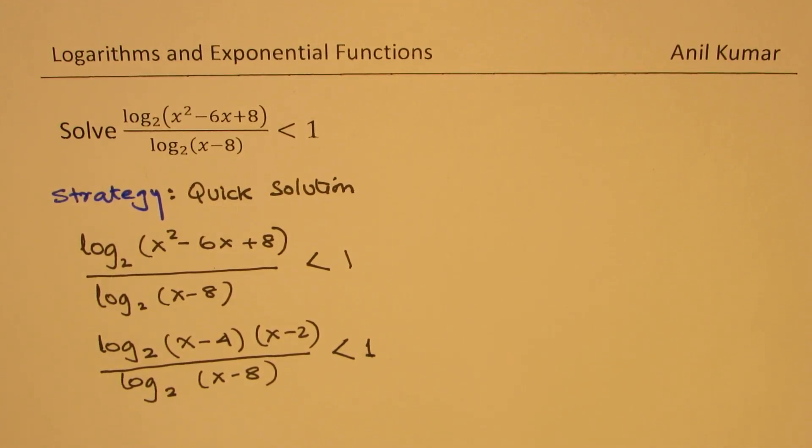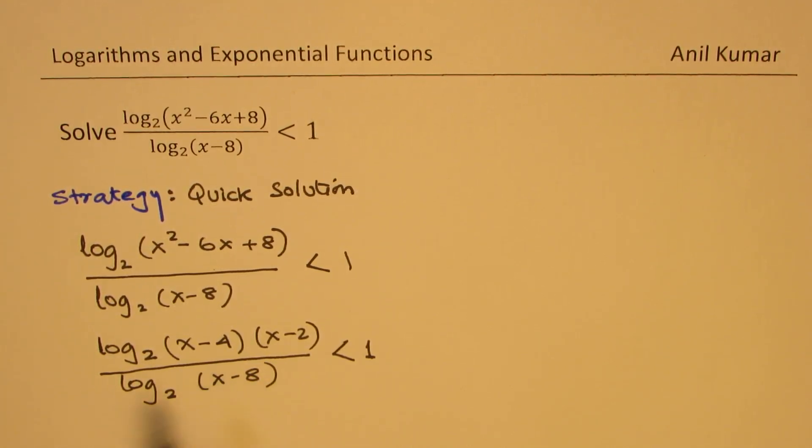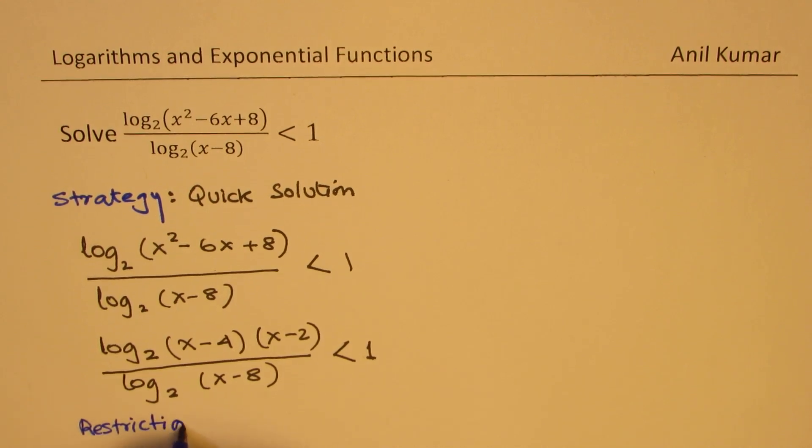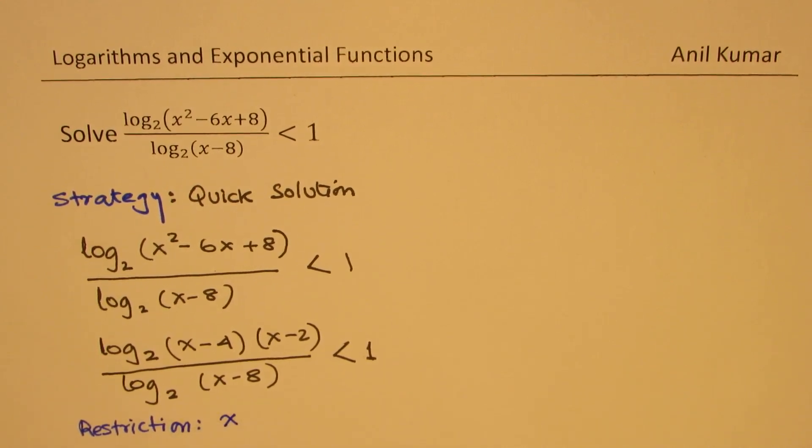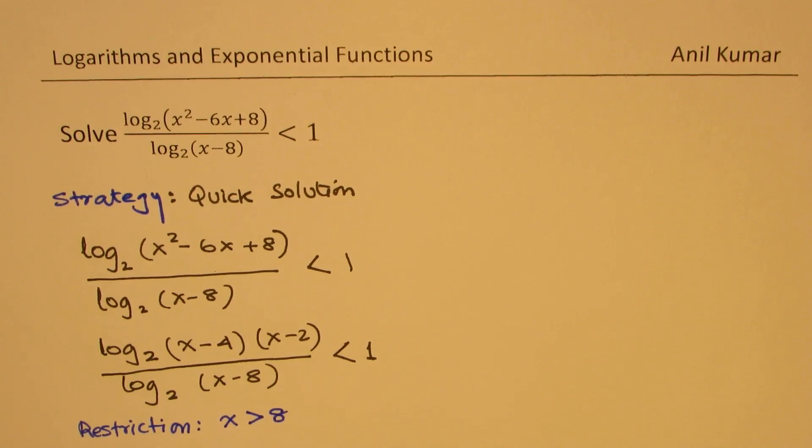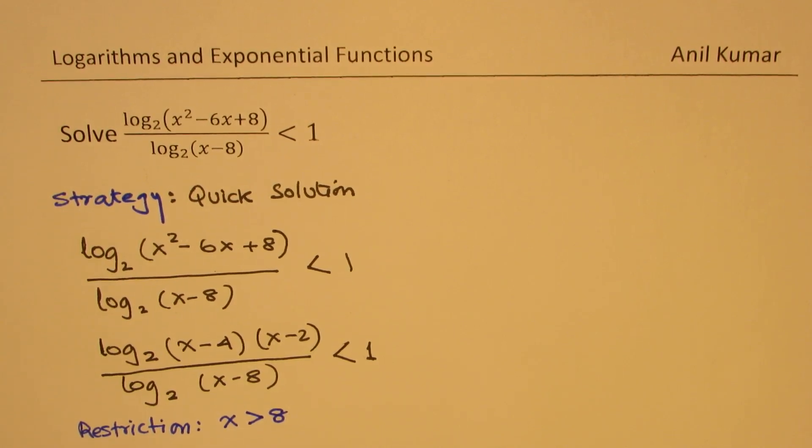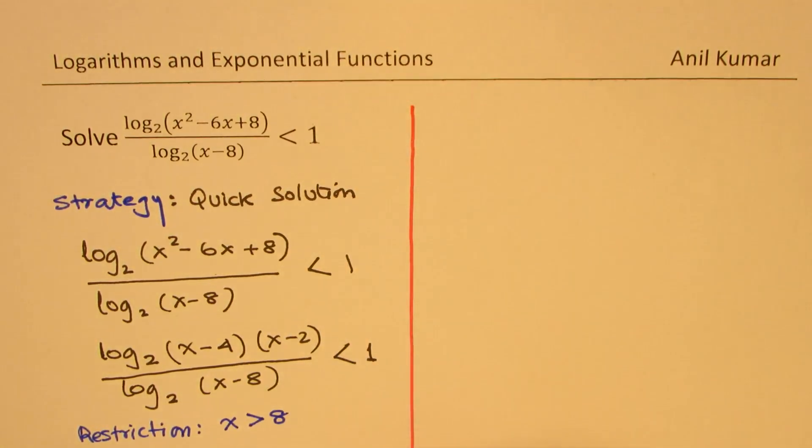Now in any logarithmic function, what is most important is to figure out what are the restrictions on the function. So clearly, we have a restriction here. That x has to be greater than 4, greater than 2, greater than 8. That means x greater than 8 prevails. So we have a value which should be greater than 8.